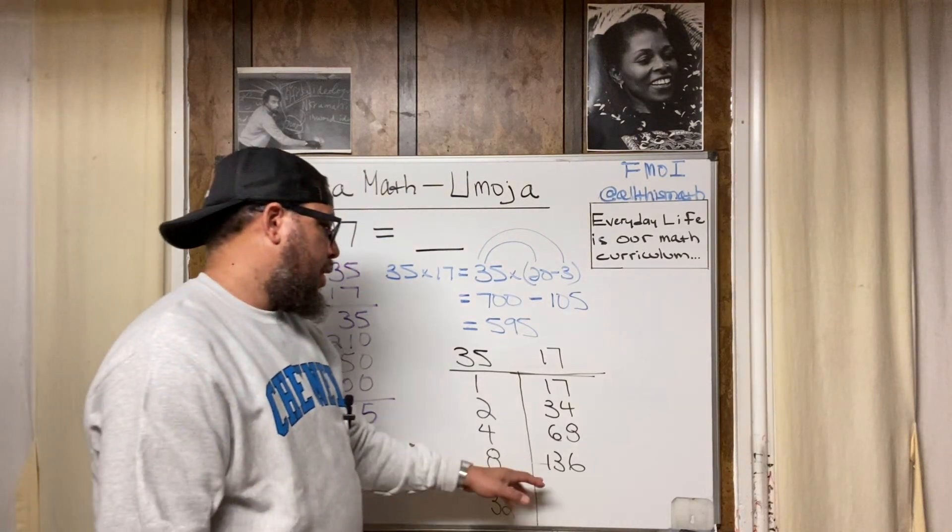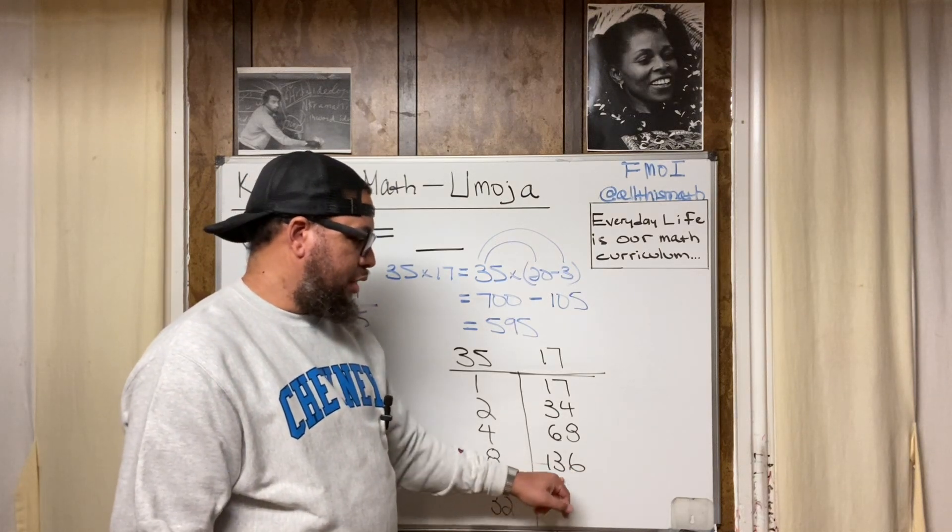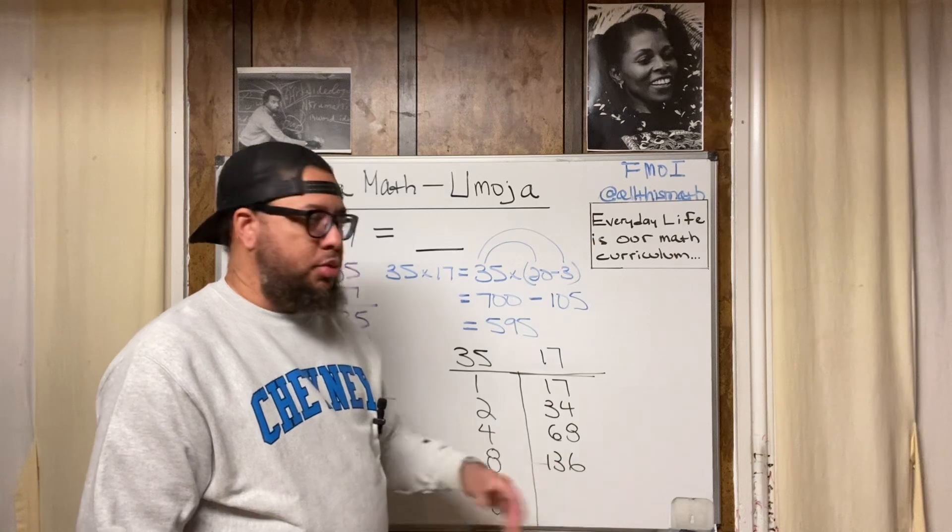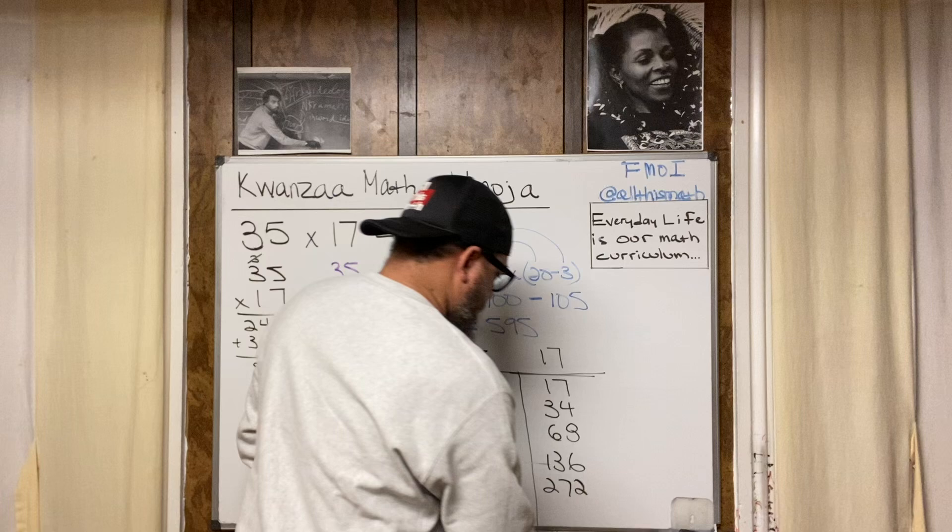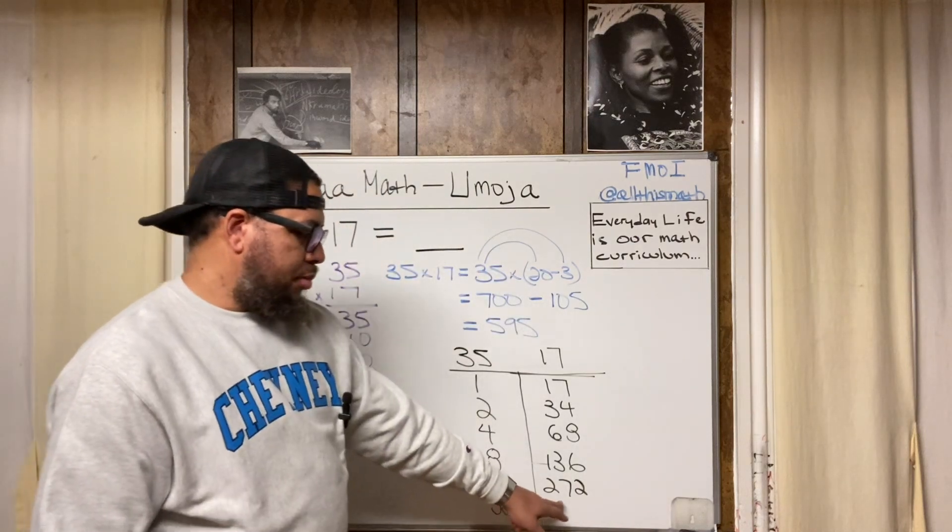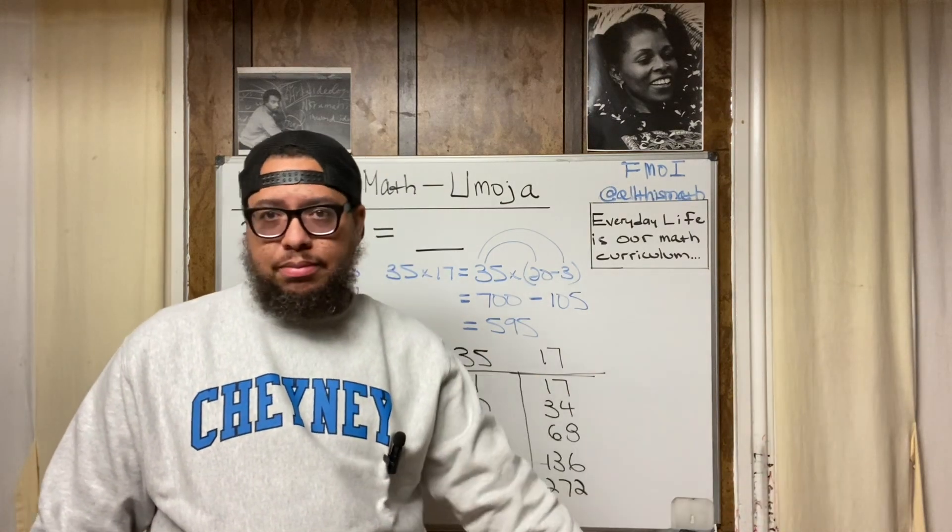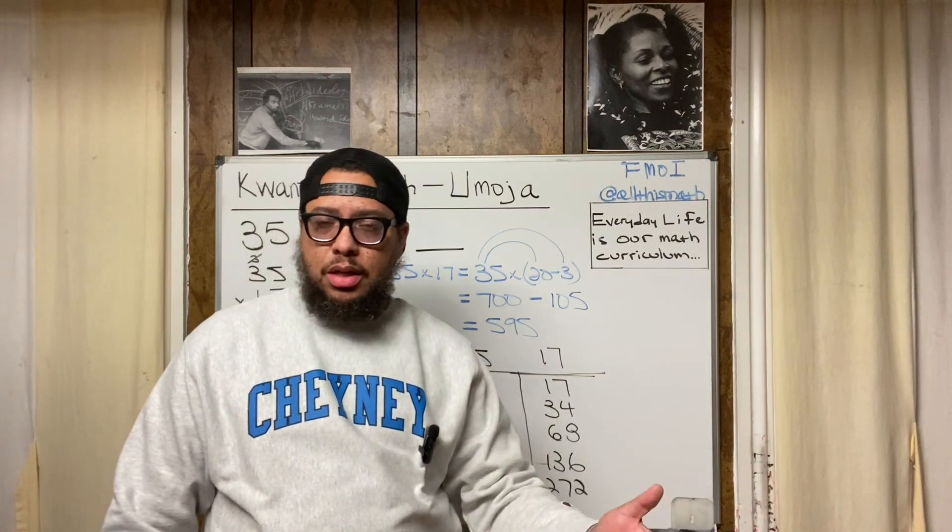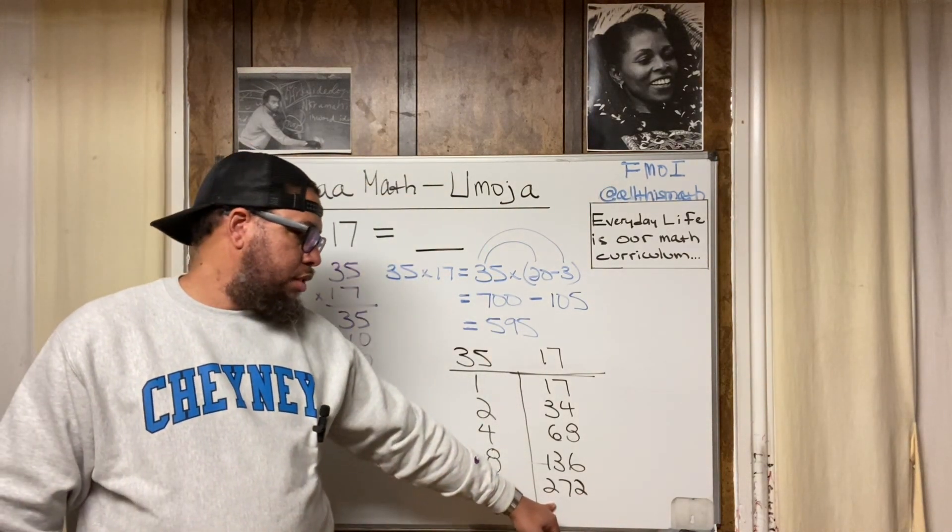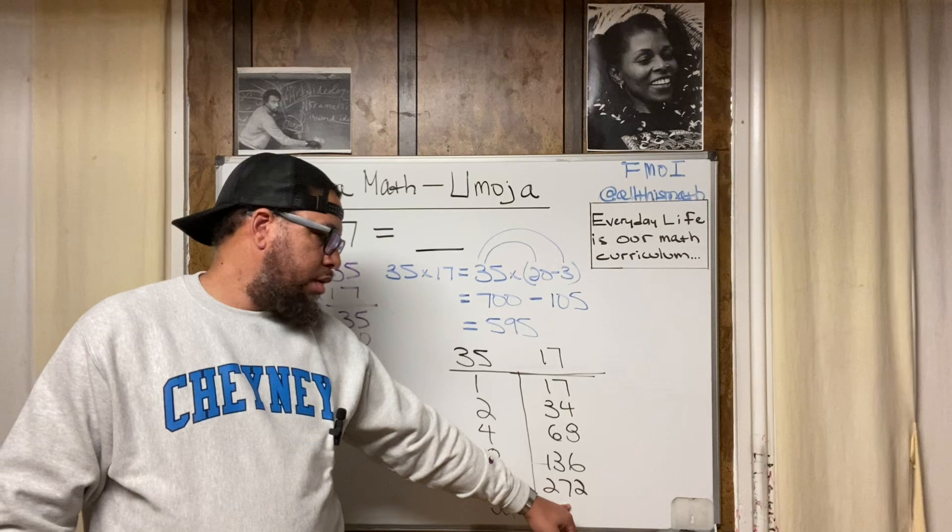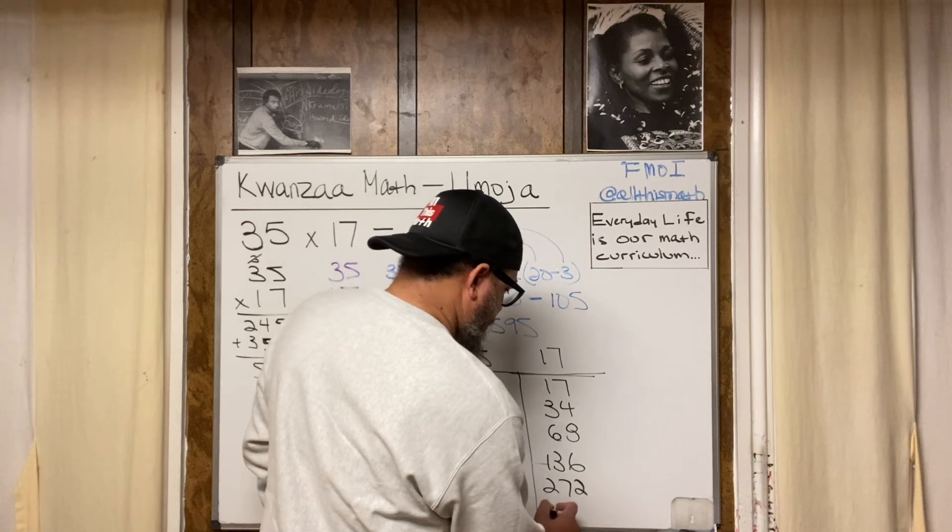136 times 2 is 200 plus 60 plus 12. 200 plus 60 plus 12. Double each of the digits. 200 plus 60 plus 12 is 272. So the 16 matches up with 272. Then I'm going to double 272. Double 272, double 200, you get 400. Double 70, you get 140. Because 7 times 2 is 14. So 70 times 2 is 140. See how that works. So 400, 140 is 540 and 4. So that's 544. So the 32 matches up with 544.